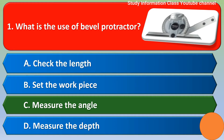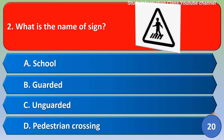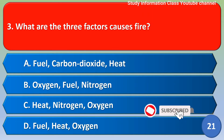Next question: what is the name of the sign shown in the figure? Option A) school, B) pedestrian crossing, C) unguarded, D) frustrating crossing. The correct answer is option B, pedestrian crossing.